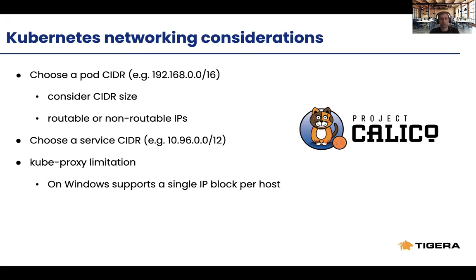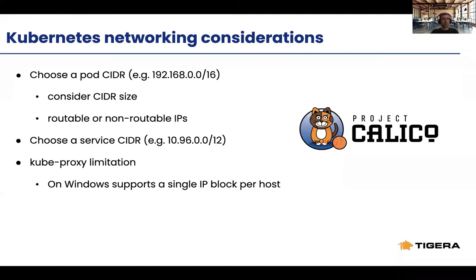The default CIDRs shown here are what Calico uses, and KubeADM also uses them — so if you're using KubeADM, installation is straightforward: just pull the Calico installation manifest YAML and apply it to your cluster. One note regarding Windows: KubeProxy has a limitation in that it supports only a single IP block per host. You need to consider how many pods will run on Windows hosts, because once you exhaust that IP block you cannot get a new one.